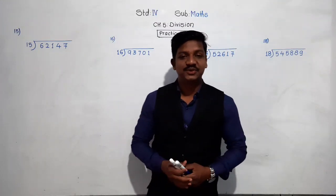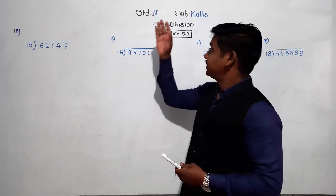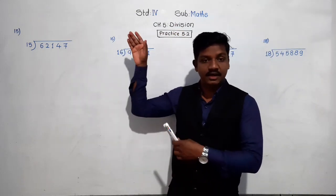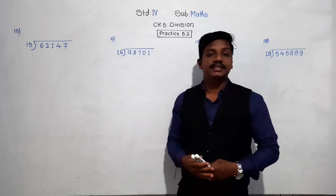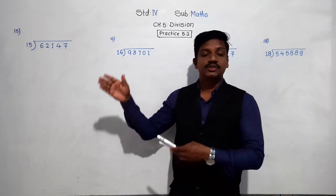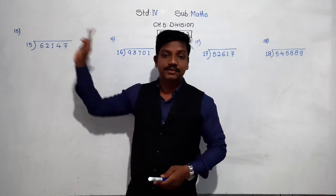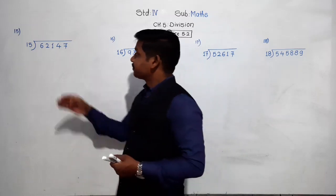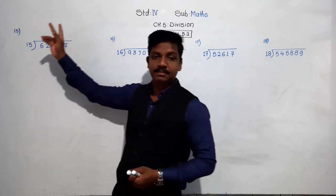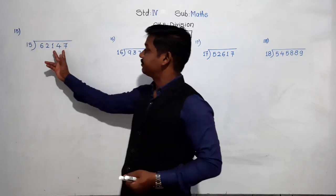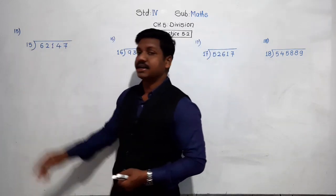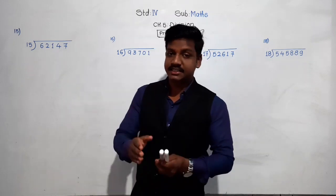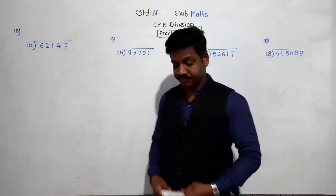Hello, dear students, welcome to today's video lecture of maths. We are dealing with Chapter 5, Division, and we have started Practice 5.2. The first four examples were given in the previous lecture, the next eight examples were given for you to solve yourself. Today we are going to solve examples from 15 onwards — 15 to 18. Example 15: 62,147 divided by 15. Here 62,147 is the dividend and 15 is the divisor.